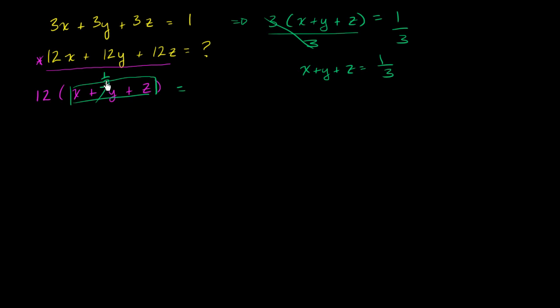So this whole thing simplifies to 12 × 1/3. 12 times 1/3 is the same thing as 12 divided by 3, which equals 4. Let's try one more.